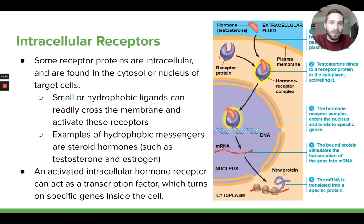Here's a quick example of what an intracellular receptor might look like. Here's a cell, and inside the cell there's this receptor protein — this is an intracellular receptor located inside the cell. It can bind to a specific signaling molecule, a specific ligand. In this case it's a hormone — specifically testosterone. This is a sex hormone which is a lipid, a steroid. Steroids are lipids which are non-polar, which means they can easily diffuse into the cell. So this molecule can easily go into the cell and bind to its receptor protein.